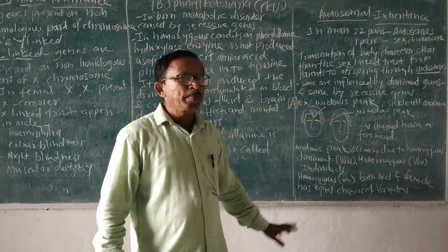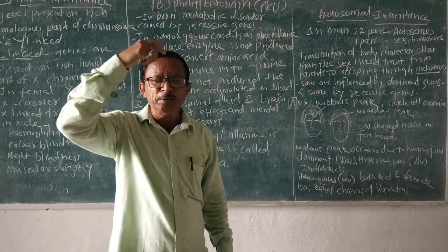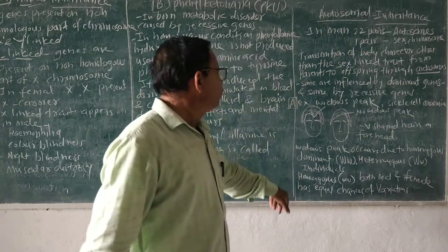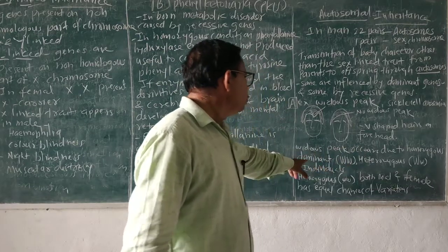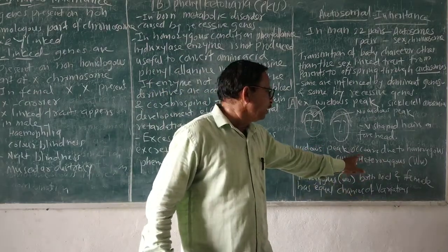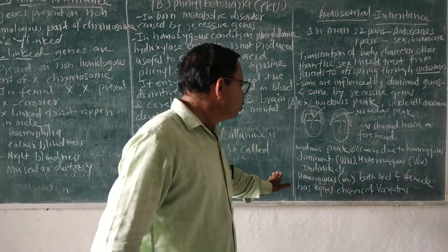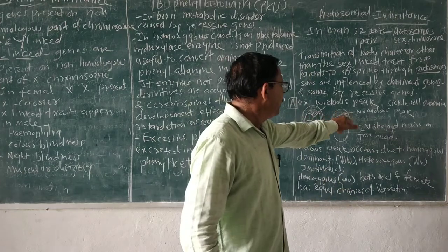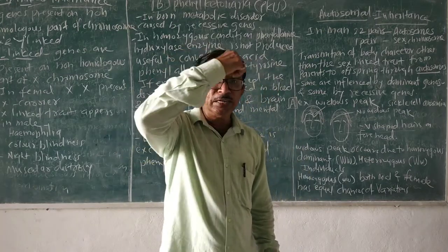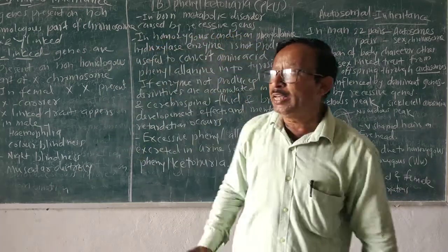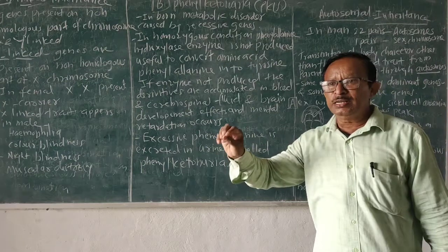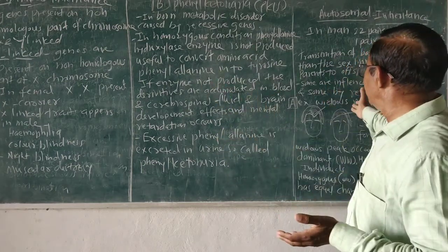The widow's peak is a V-shaped structure present on the forehead. This is the character studied for autosomal inheritance. Widow's peak is expressed due to the homozygous dominant character (WW) and the heterozygous condition (Ww). But when the homozygous recessive condition (ww) is present, there is no widow's peak. So both the homozygous dominant and heterozygous conditions are responsible for the morphological expression of this trait.